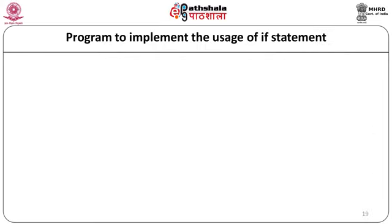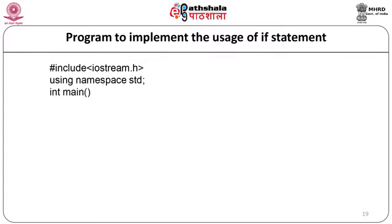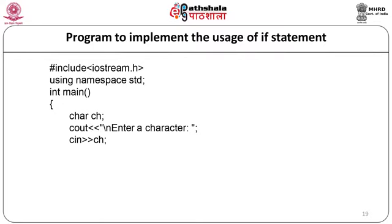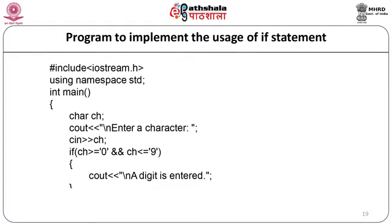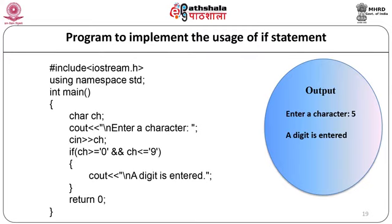Let us see a simple program using the if statement. The program includes iostream, uses namespace std, and starts with main. A character variable ch is declared. The message 'enter a character' is displayed and input is taken via cin. The if condition checks: if ch >= '0' && ch <= '9', it displays 'the digit is entered'. When compiled and executed, entering digit 5 displays 'the digit is entered'.